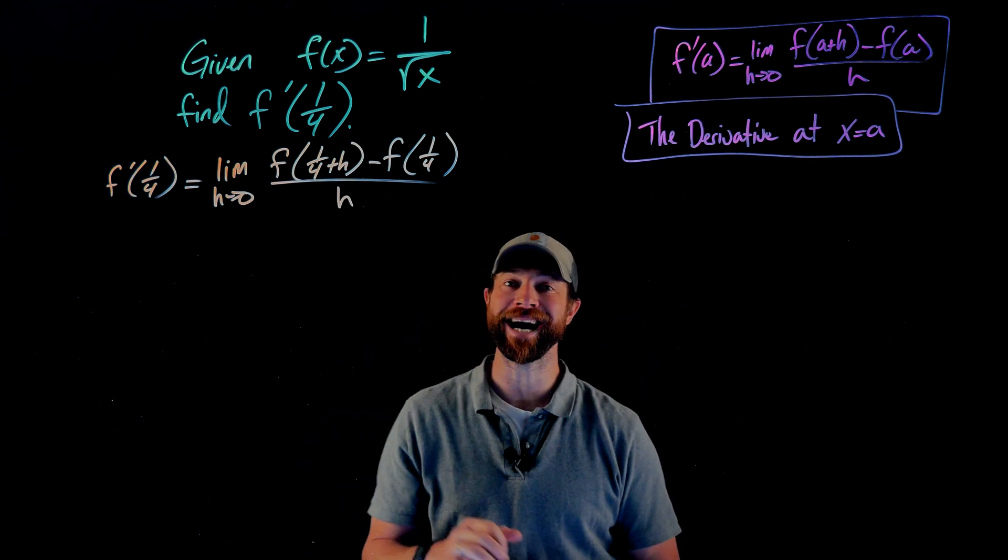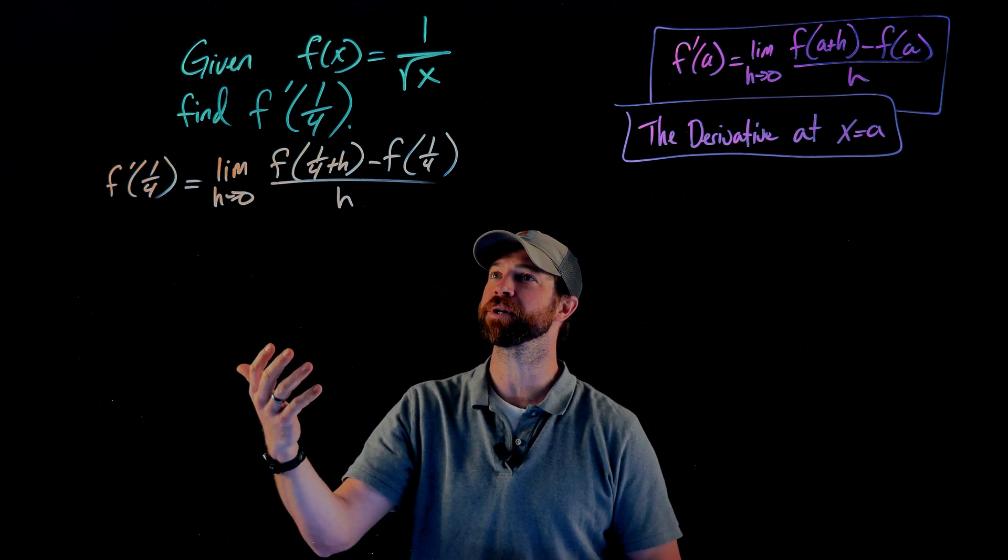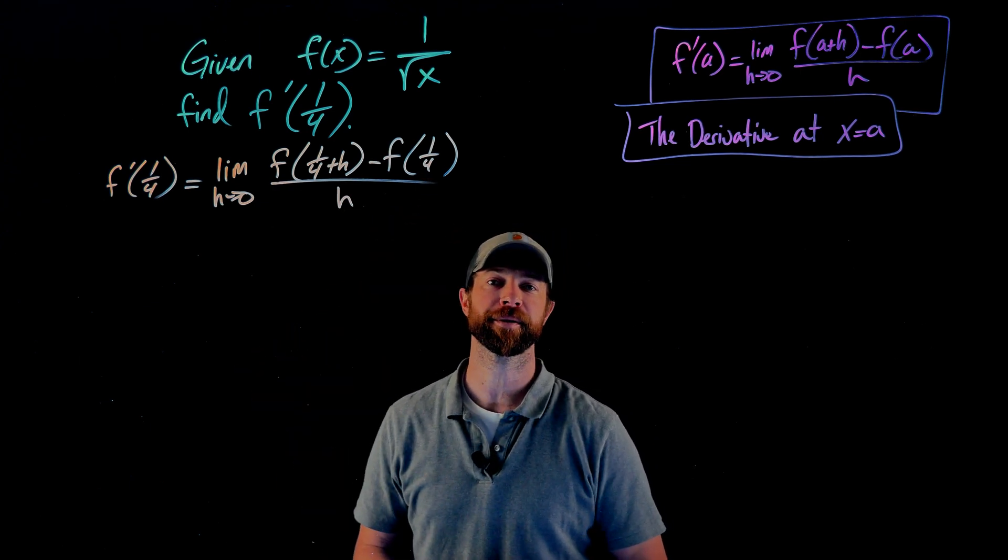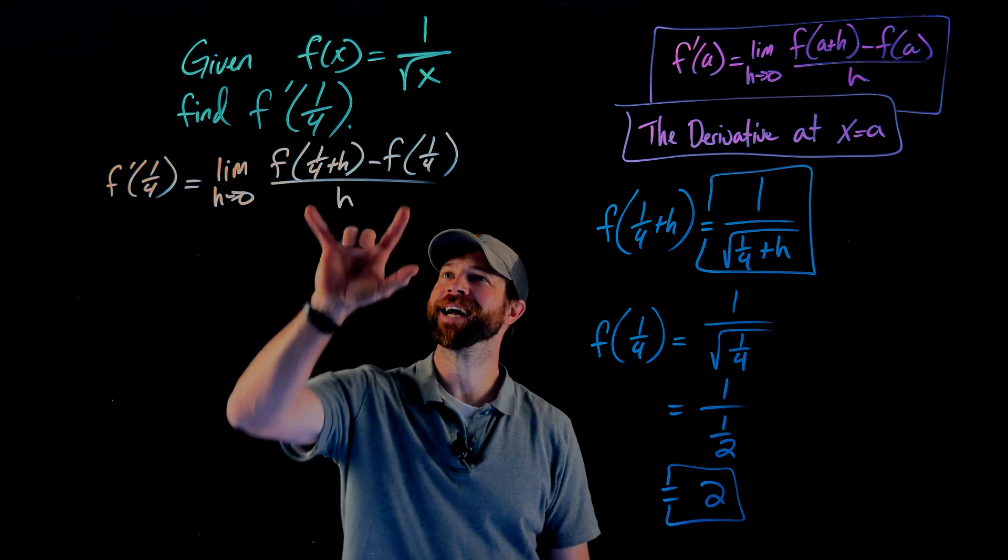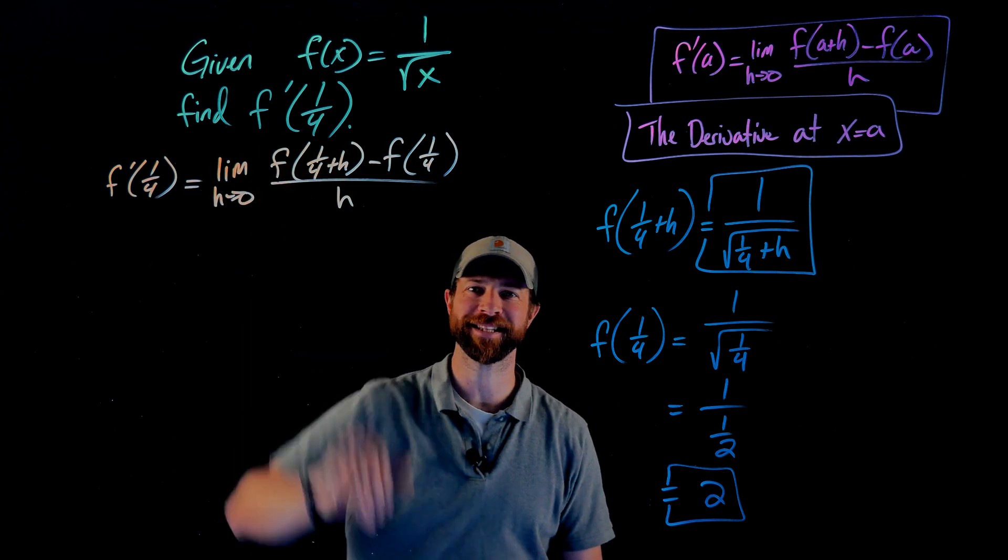What I'm now going to do on the side is I'm going to simplify these two expressions, f(1/4 + h) and f(1/4). I'm just simplifying the components of the numerator here. I always do this on the side just so I don't have to rewrite this a million times.